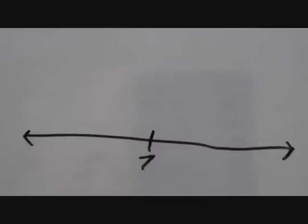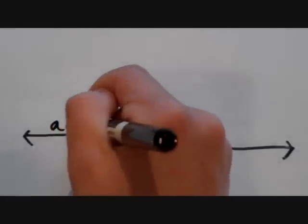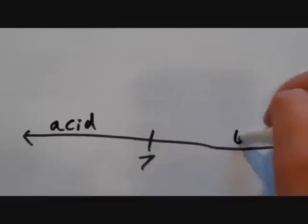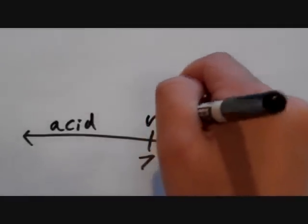The pH scale determines whether something is an acid or a base. On this side, we have acid. On this side, we have base. And in the center, we have neutral.